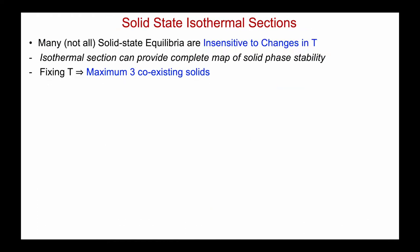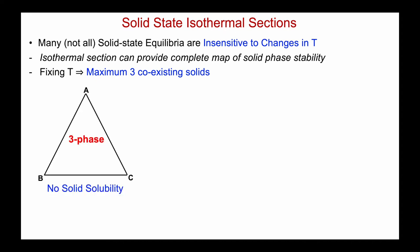Now, there are many examples of solid-state ternary equilibria where the solid-state reactions are insensitive to changes in temperature — in other words, the solids maintain the same equilibrium state at all temperatures. In this case, a single isothermal section can provide a complete map of the solid phase stability. When we fix temperature, we can have a maximum of three coexisting solids.